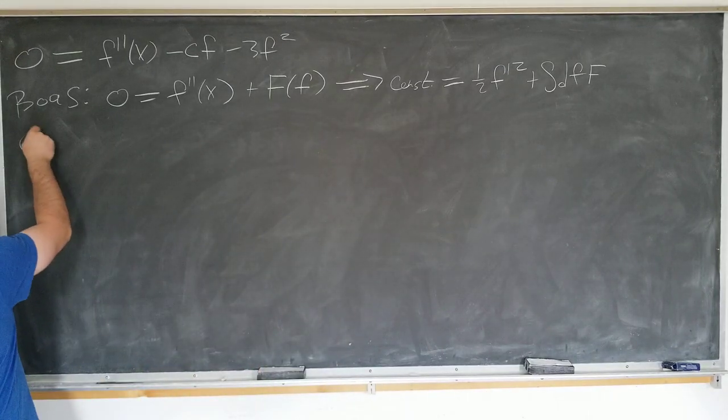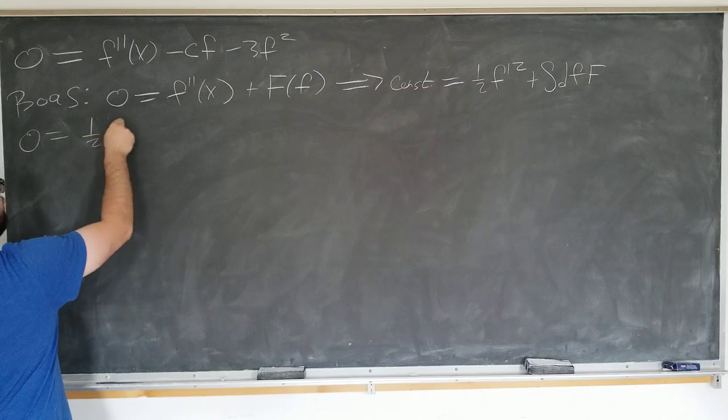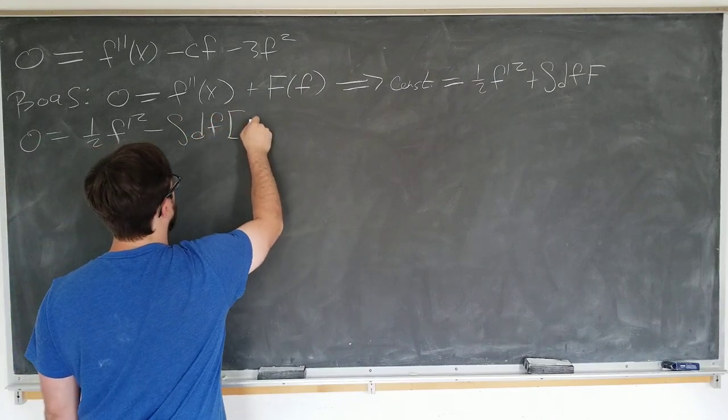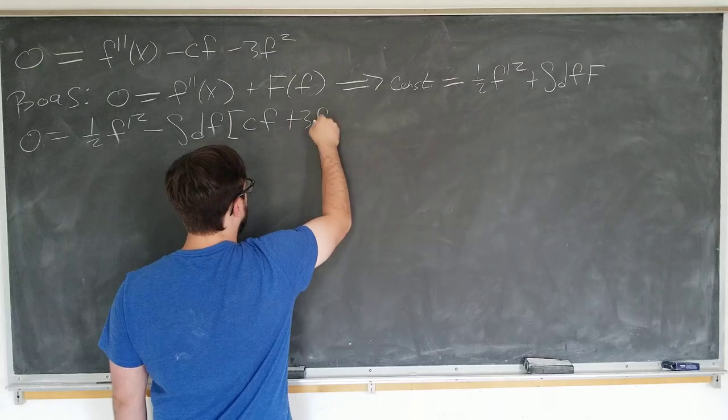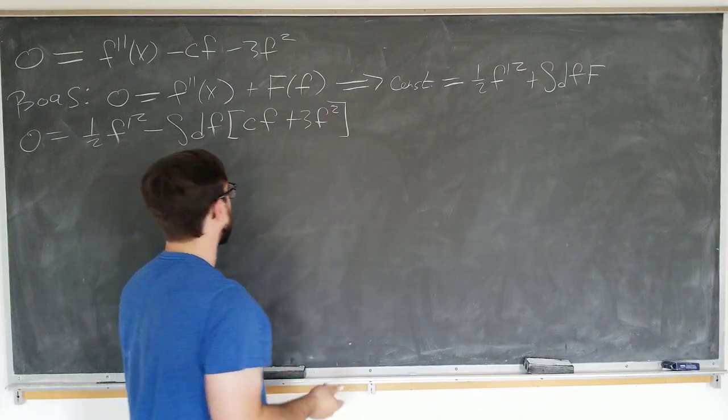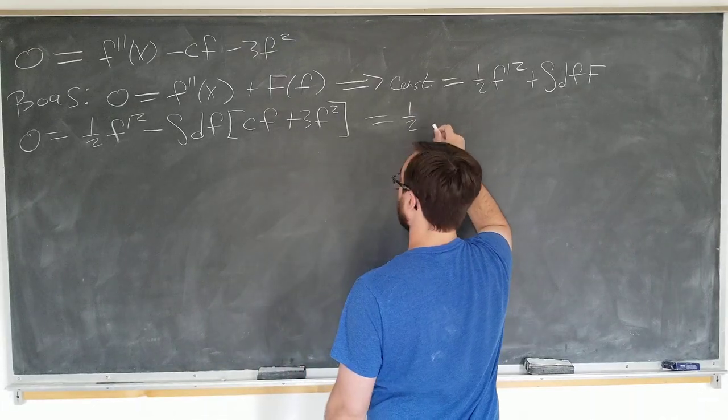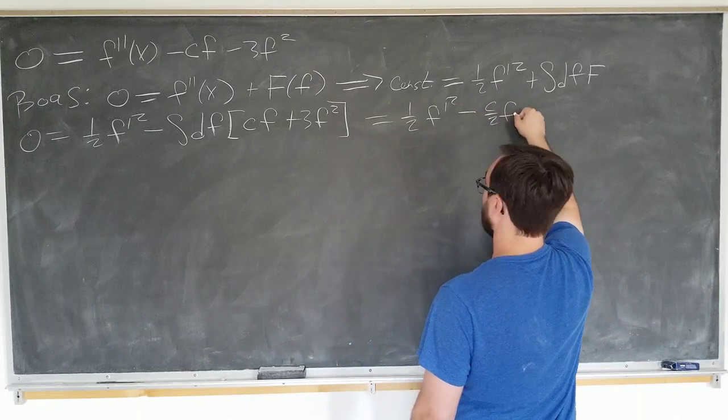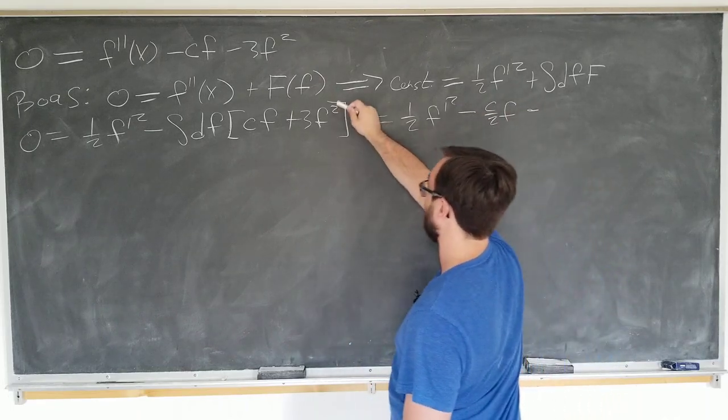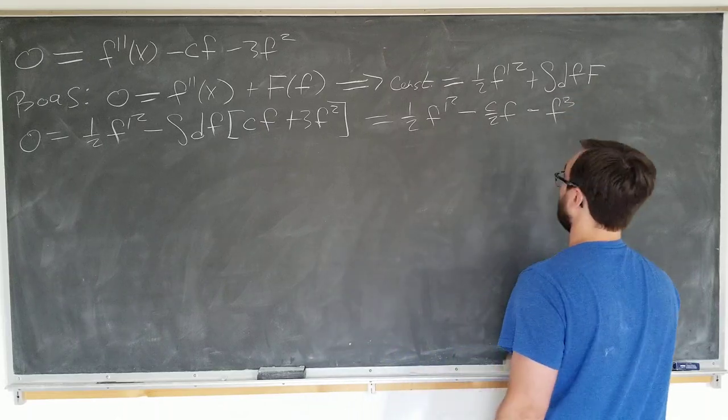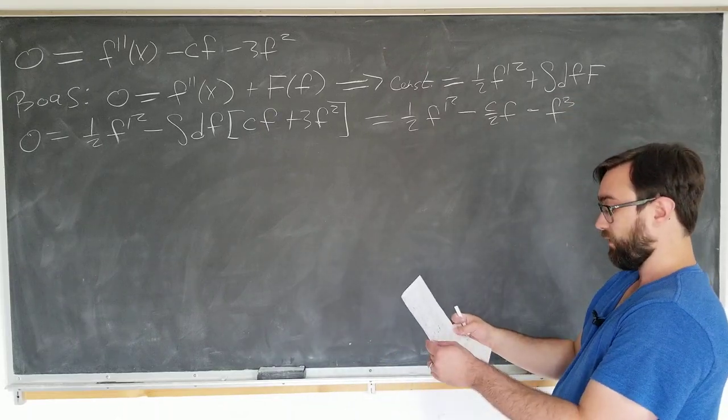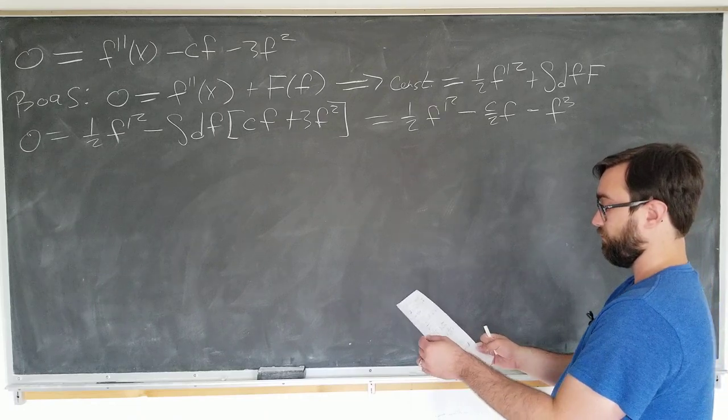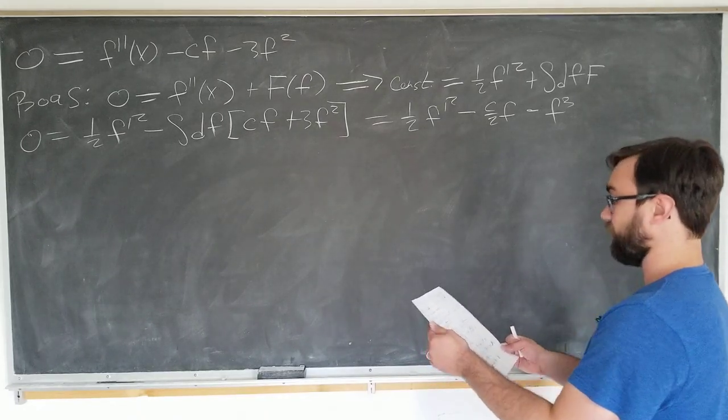Alright, let's just apply this to our particular example with the constant being zero again. So now we have zero is equal to one half f prime squared minus the integral with respect to f of our potential, which is cf plus 3f squared. Now we can do this integral. It's not that bad. One half f prime squared minus c over 2 f squared minus f cubed. Sounds good.